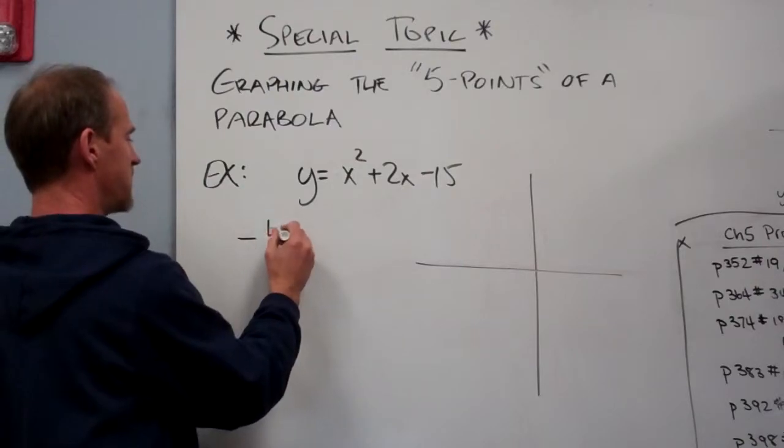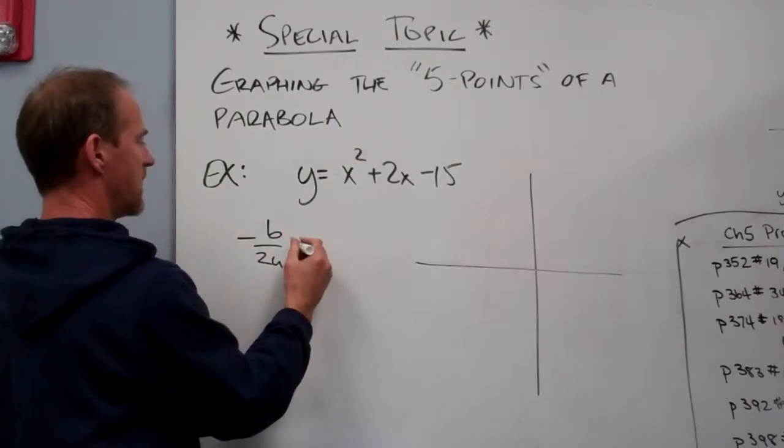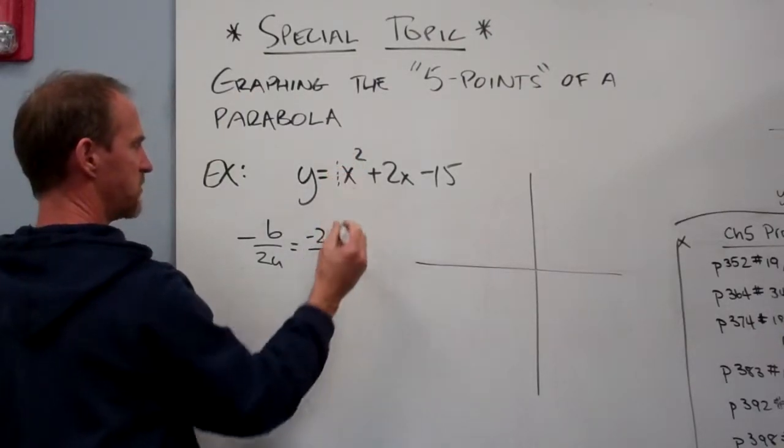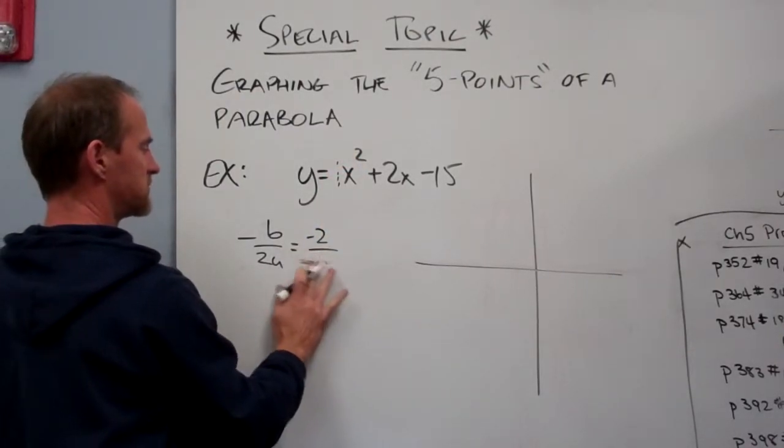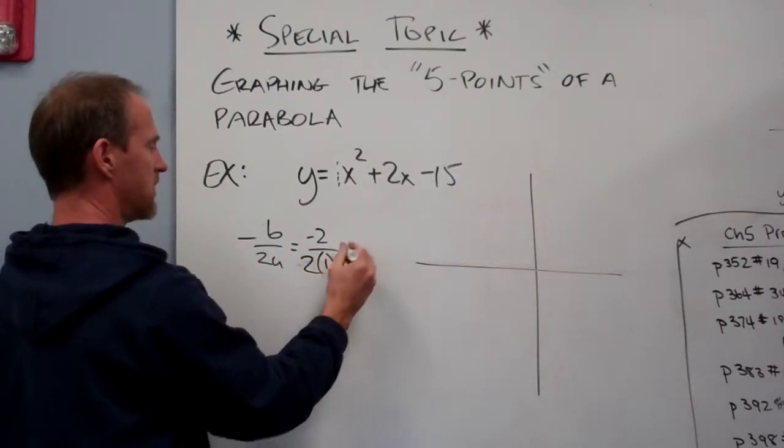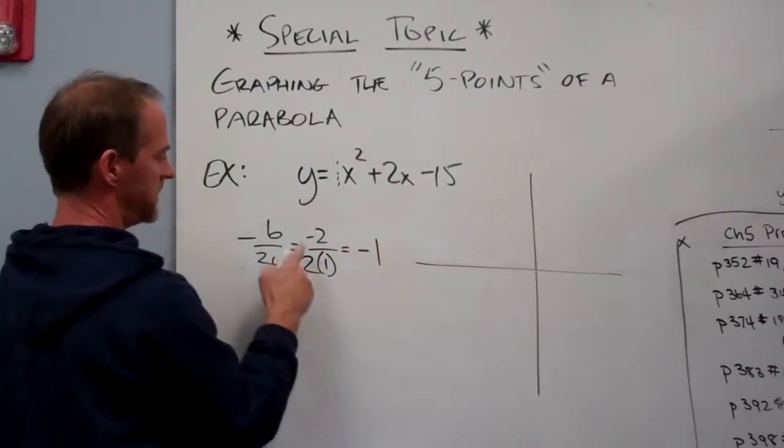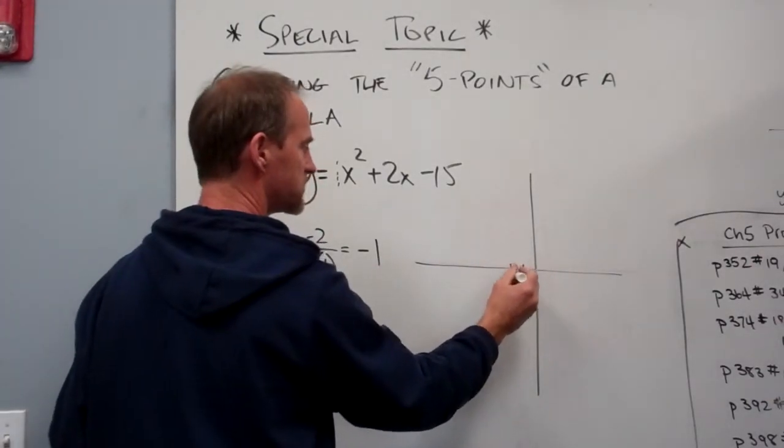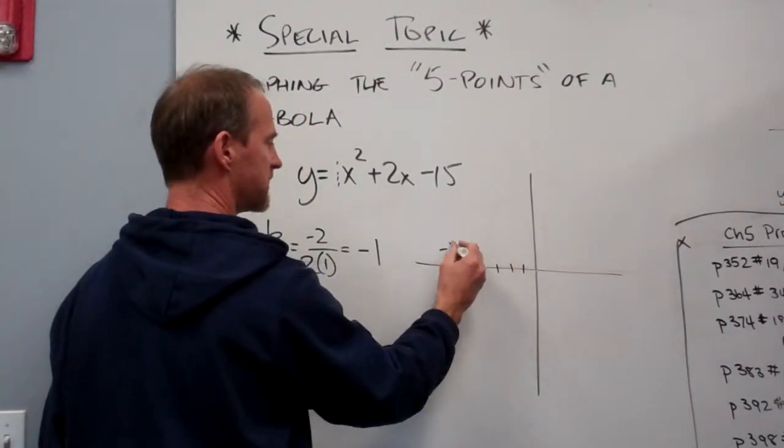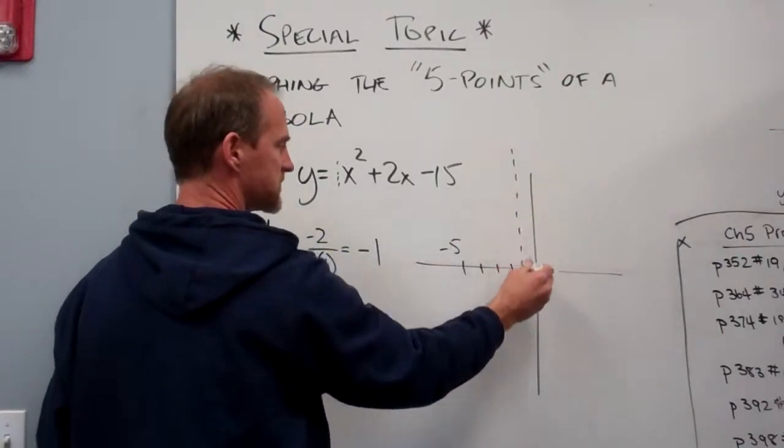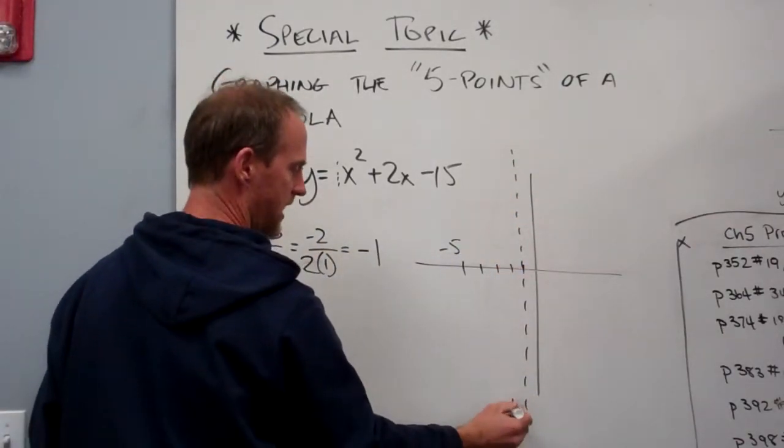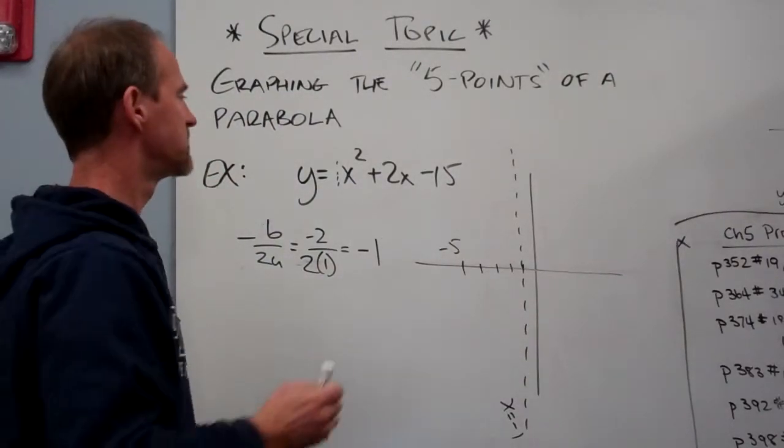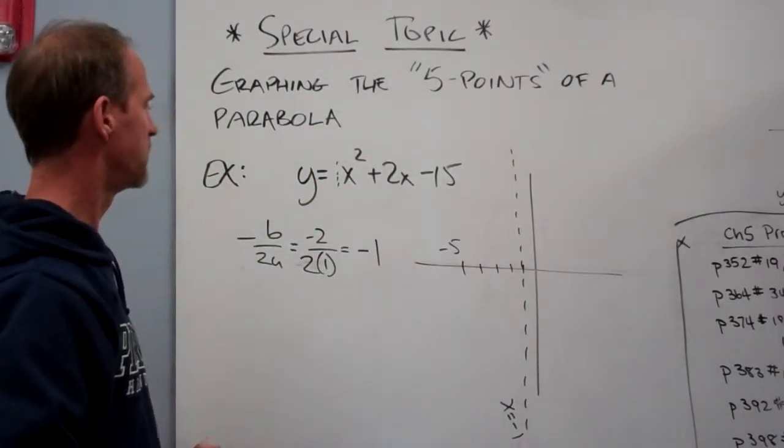We'll use our magic formula minus b over 2a. And when I do that, I get a minus 2 over 2 times our invisible 1. And 2 times 1, that's just a negative 1. Negative 2 over positive 2 is negative 1. So there's 1, 2, 3, 4, there's negative 5. My axis of symmetry is going to be along the line x equals negative 1. That's where my fold line is going to be for my symmetry in my parabola.